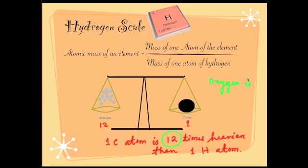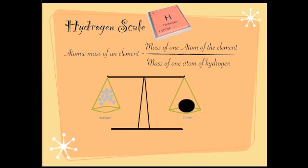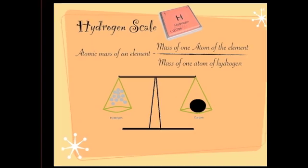Similarly, oxygen is 16 times heavier than a hydrogen atom, which means the atomic mass of oxygen is 16. This is how we calculate atomic mass taking hydrogen atom as the standard element. Now let's see what other standard elements we have taken.